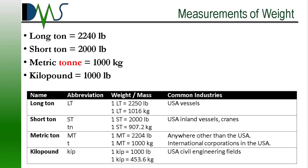Well, somebody decided that they preferred round numbers, and they shortened that down to a short ton, measuring 2,000 pounds. Next, the metric system tried to introduce order. It brought the metric tonne, which was only partially successful in the maritime industry.